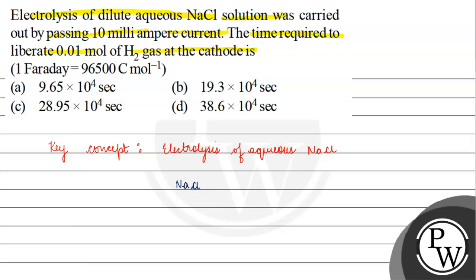Dissociation of NaCl gives Na⁺ and Cl⁻, and if we have aqueous solution, then water dissociates as H⁺ and OH⁻.